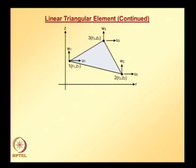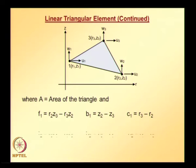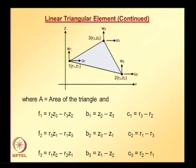If the coordinate information of all three nodes is given, we can easily find the area of the triangle, and coefficients F1, F2, F3, B1, B2, B3, C1, C2, C3. The area of the triangle can also be computed using the relation that area equals half times the determinant of a matrix with 1's in the first row, R-coordinates in the second row, and Z-coordinates in the third row of all three nodes.